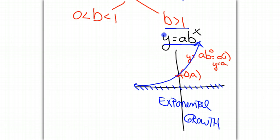Now, if we take the other case where b is smaller than 1 but still positive, some of the same characteristics will hold. We are still going to pass through the point (0,a), and we are still going to have an asymptote on the x-axis.